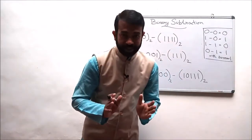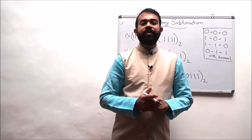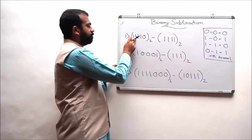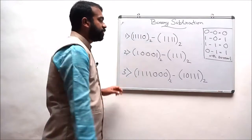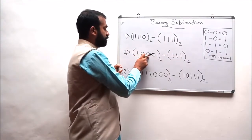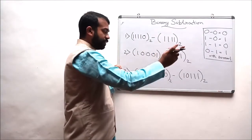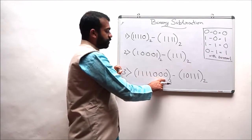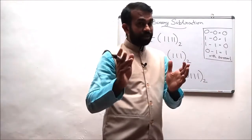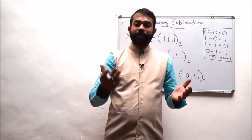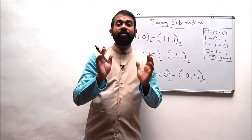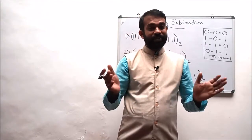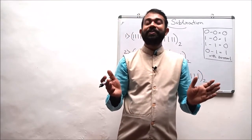Students, please go through this assignment. The questions are: subtract 1-1-1-1-1 from 1-1-1-1-1; subtract 1-1-1 from 1-0-0-0-1; and subtract 1-0-1-1-1 from 1-1-1-1-0-0-0 to the base 2. I hope you have understood this topic. In the upcoming lecture we will discuss how to subtract a floating-point or fractional binary number. See you soon — goodbye, thank you, and all the best.